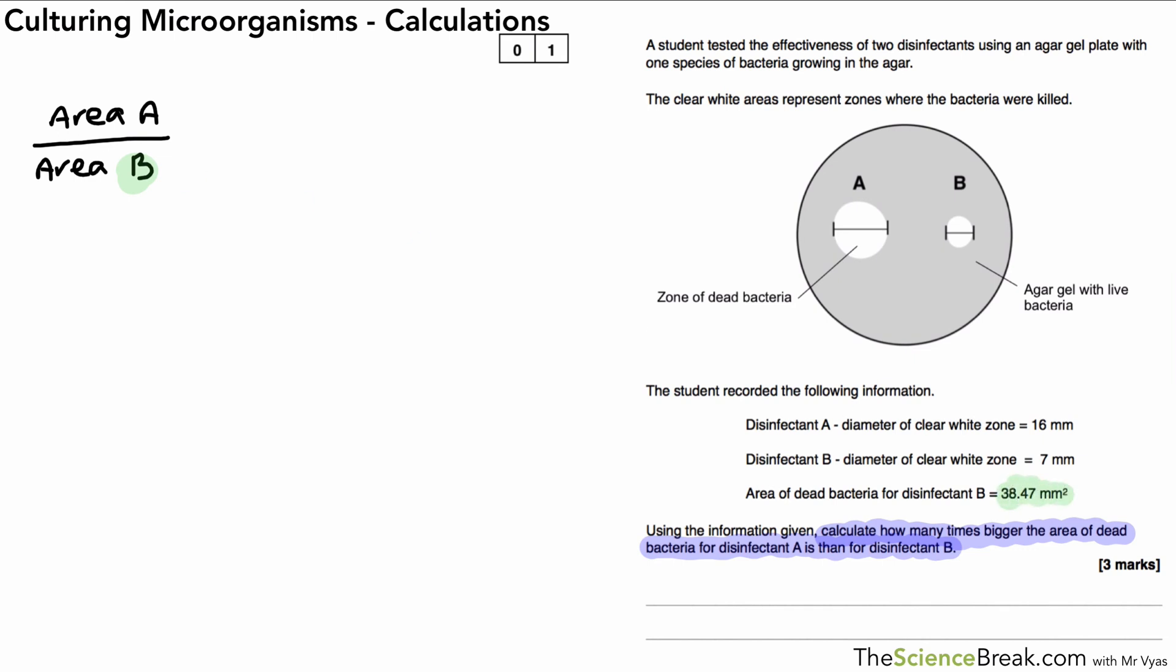This is a three mark question, so there's going to be quite an involved calculation. We've been given area B, so we've just got to calculate area A. We've got the diameter for area A at 16, so the radius would be 8. Here's our calculation: 3.14 times 8 squared, or times 8 times 8, and our answer is 200.96. Then we divide that by area B, which is given in the question. When we put that into our calculator—remember you will be required to have a calculator for all your science exams—we have an answer of 5.22. So area A is 5.22 times bigger than area B.